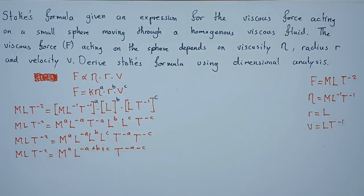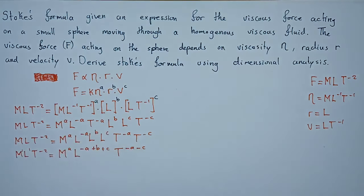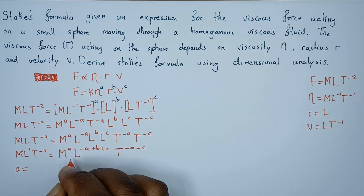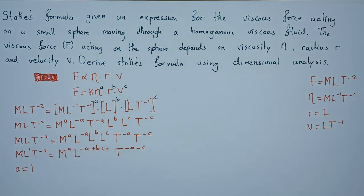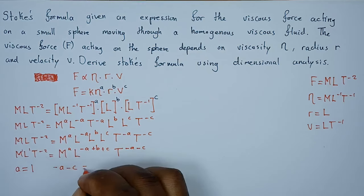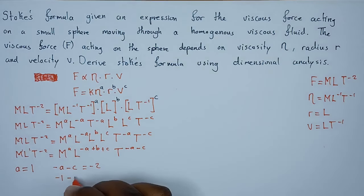Now we're comparing the powers of M, the powers of L, and the powers of T. We can clearly see that the power of M on this side is A, this side it is one, so A equals one. For T, this side we have negative A minus C, this side we have negative two. But remember we found A equals one, so this will give us negative one minus C equals negative two.